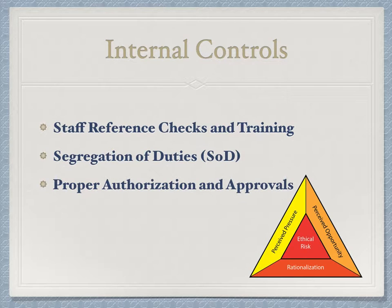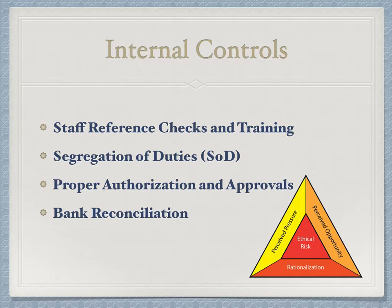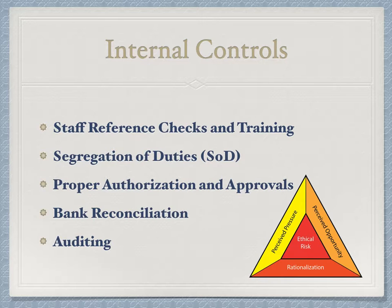Proper authorization and approval is another important control measure. This is when a company decides and delegates who approves transactions, along with how and when those transactions are made — that way everyone knows who is responsible for what and there is less room for invalid or unauthorized transactions. Bank reconciliation is basically making sure our accounting numbers match those at the bank, and it's a way to find bank errors or transaction discrepancies. Lastly, auditing is probably the single most important internal control and should be done regularly. Auditing is a way to cut through the muck and expose any financial or employee issues within the company so that they can be corrected.